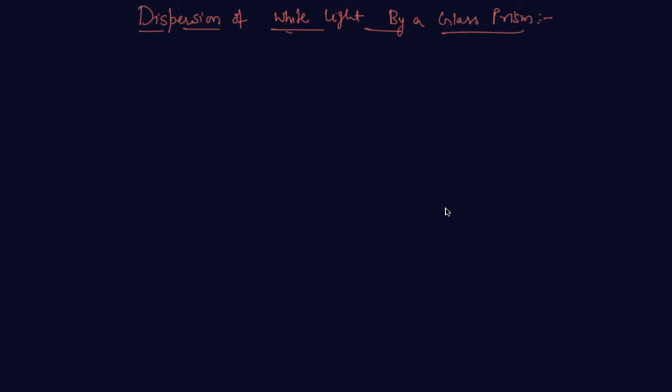So when white light comes in contact with the prism, it splits into seven colors that we will discuss now. Let's say this is a prism. Let me change the color of the prism.